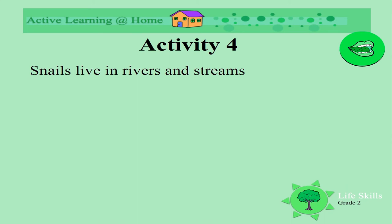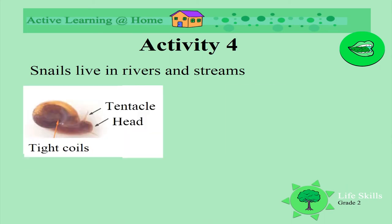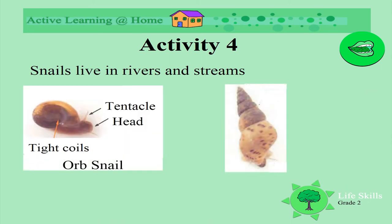Snails also live in rivers and streams. Look at the orb snail with its round, curly, tight coiled shell. Then there is another one — look at the spirals on it. Have you seen snails in the rivers near you?